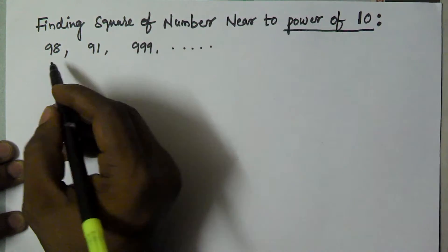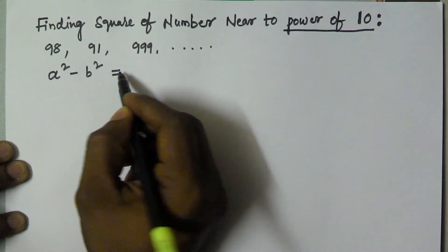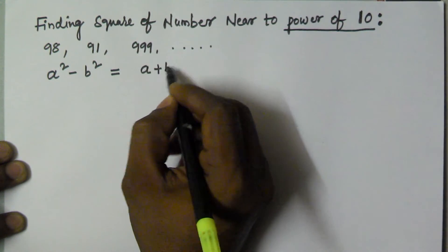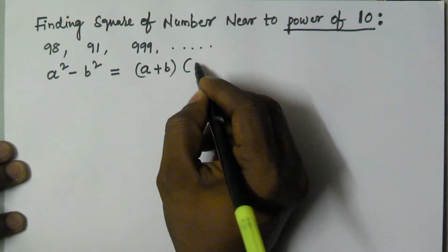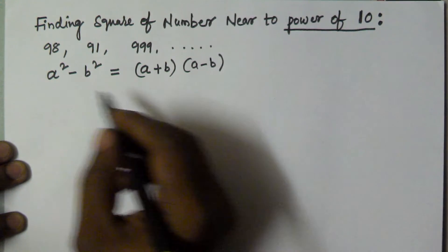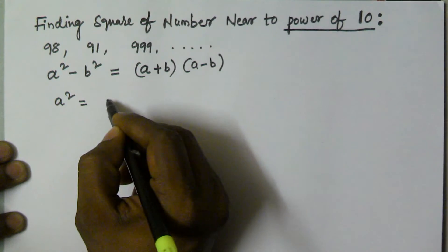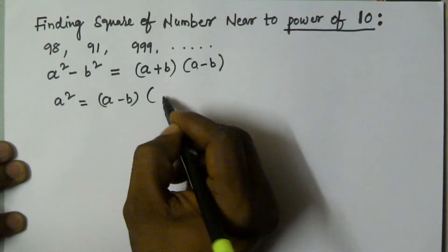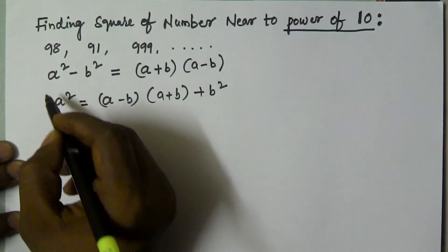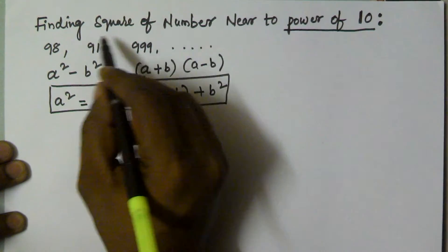To find the square of a number near to a power of 10, I'm going to use one formula. The formula is: a² minus b² equals (a plus b) times (a minus b). So rearranging, a² equals (a minus b) times (a plus b) plus b². I'm going to use this formula to find the square of a number near to a power of 10.